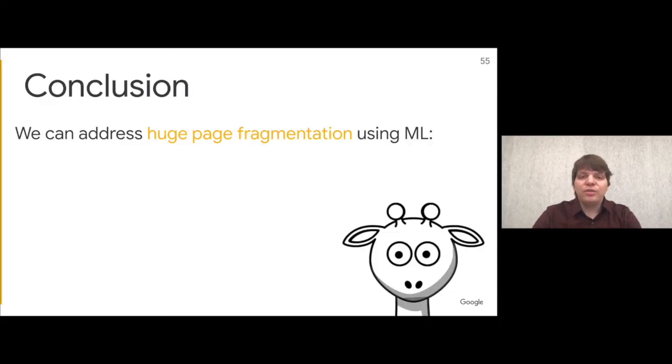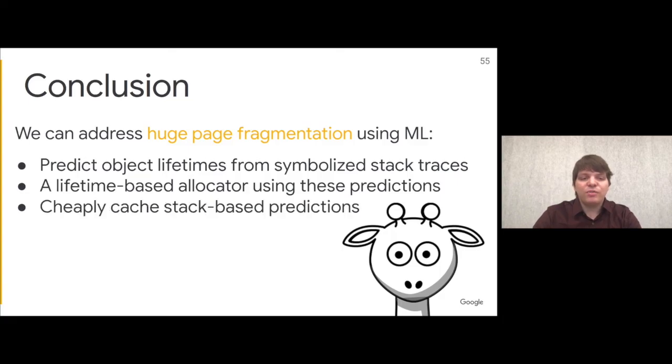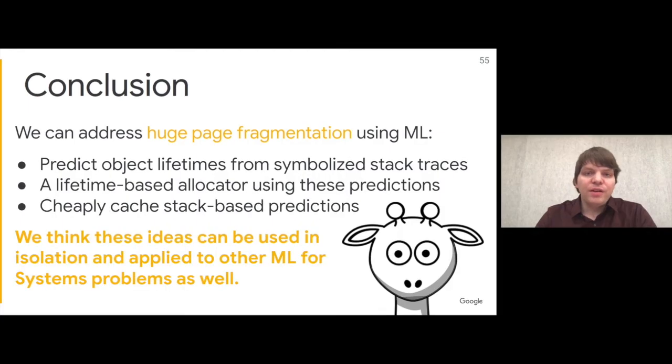In conclusion, we showed how to reduce fragmentation in C++ workloads running entirely with huge pages by combining machine learning with an entirely new kind of memory allocator. We think some of the ideas from this paper apply beyond the specific scenario we looked at. We showed that you can predict object lifetimes from symbolized stack traces, but this might apply to other properties as well. We introduced the first memory allocator that's entirely lifetime-based, and these lifetimes don't necessarily have to come from machine learning. We showed you can cheaply run a machine learning model within runtime critical components by caching the results.